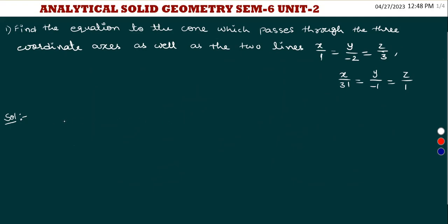Find the equation of the cone which passes through the 3 coordinate axes as well as the 2 given lines. In the last class, we found the equation of the cone which passes through the 3 coordinate axes.